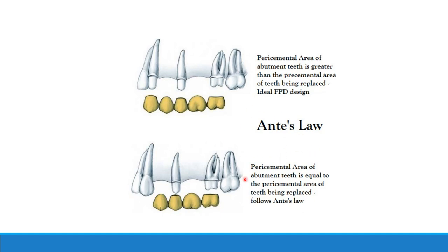In the second photo you can see the periodontal area of the teeth being replaced. This is equal — two pontics and two abutments. In another example there are three abutments and two pontics.